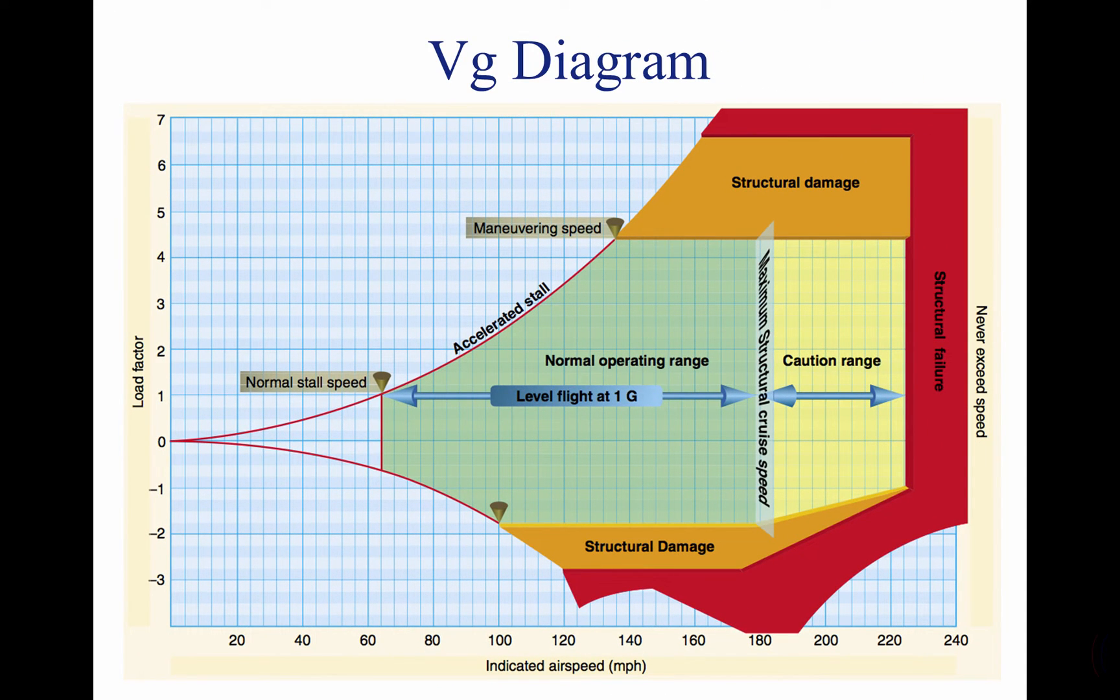The flight operating strength of an aircraft is presented on a graph whose vertical scale is based on load factor. The diagram is called a VG diagram, or velocity versus G loads or load factor. Each aircraft has its own VG diagram, which is valid at a certain weight and altitude. For any given load factor, a straight line may be drawn across the diagram to see at which airspeed certain operating ranges exist. Also, for certain airspeeds,